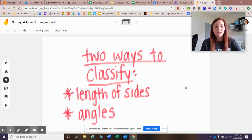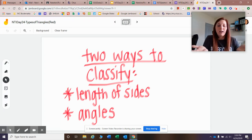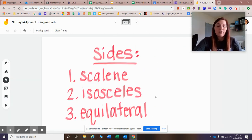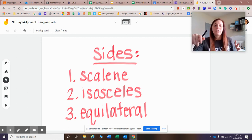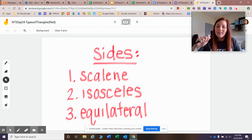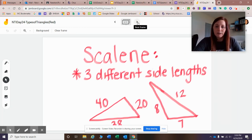First off, what you need to know is there's two ways to classify a triangle. You can classify it by the lengths of the sides, or you can classify it by their actual angles. So let's look at the lengths of sides first. There are three main types of triangles whenever you are looking at how long their sides are. So you've got scalene, isosceles, and equilateral. What do those each mean? Let's dive into it.